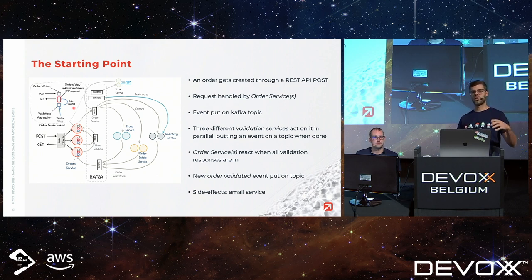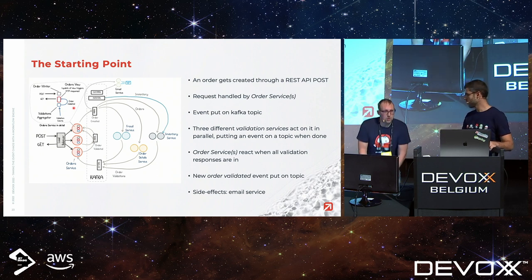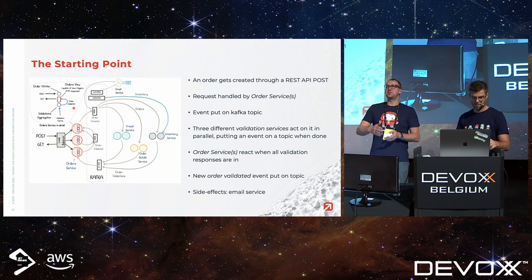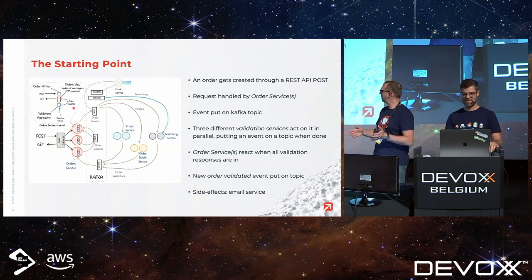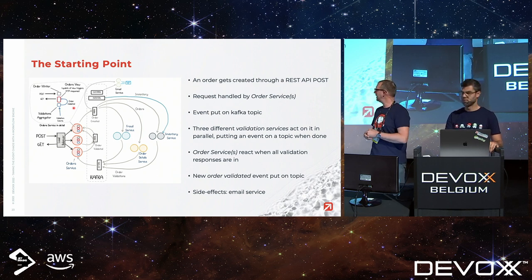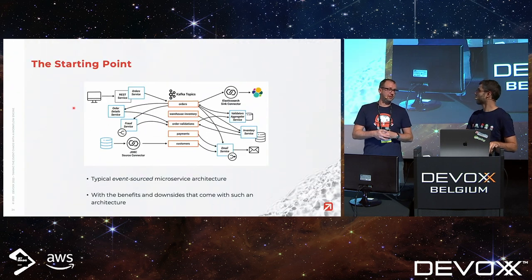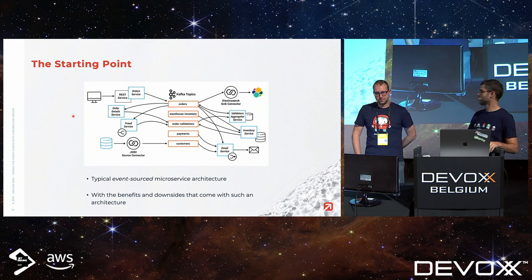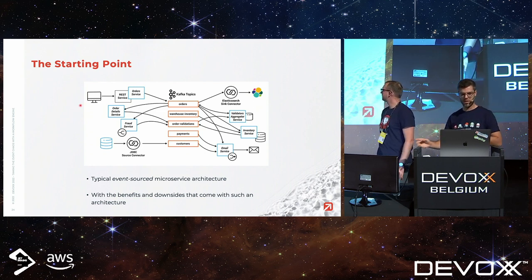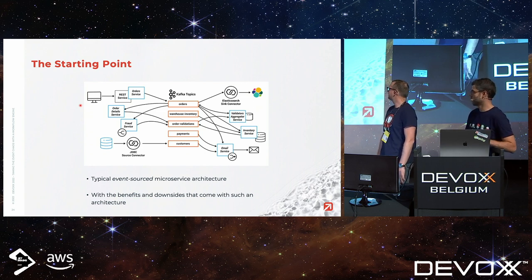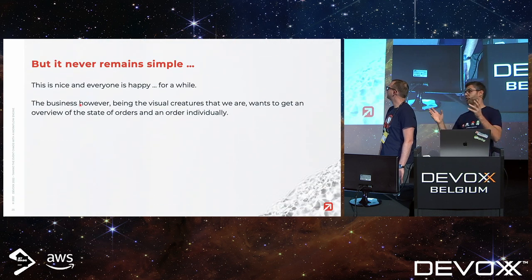Then there's an aggregator: once the validation services are done, they push data to a different topic picked up by another service that aggregates everything and updates the order back into the system. The point is — this architecture is already hard to grasp. If I asked anyone to repeat what Philip just described, nobody could. It's not that complex but it's already hard to get into our minds.